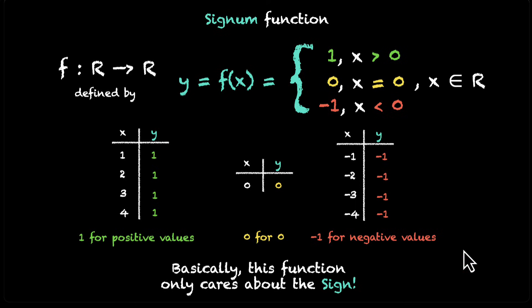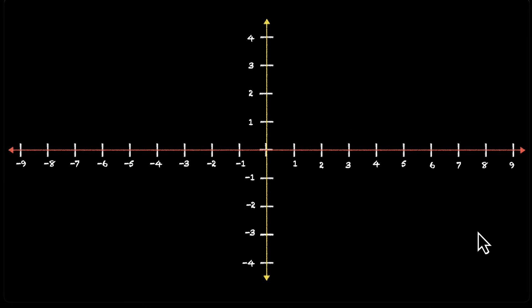Alright, now let's look at the graph. If you want, you can pause the video and try drawing it on your own. Okay, so let's do this together. This is our x-axis. This is our y-axis. We want to draw y equals f(x) equals sgn(x).